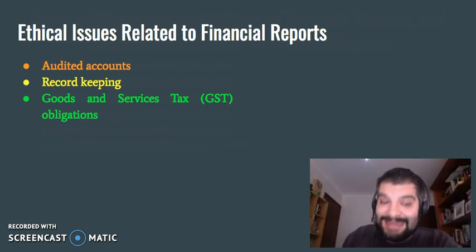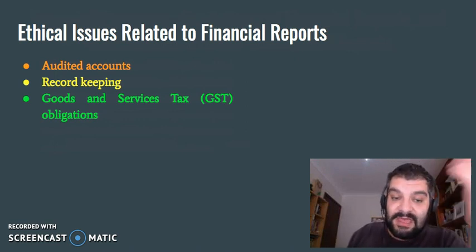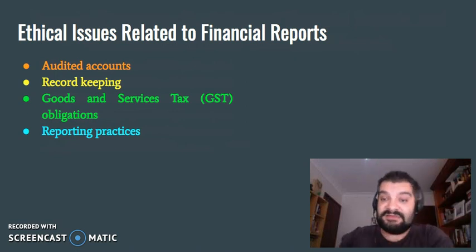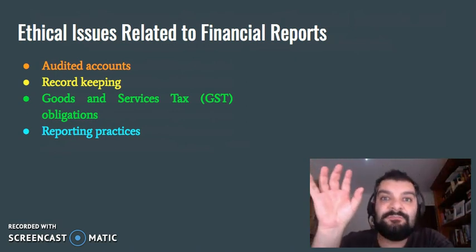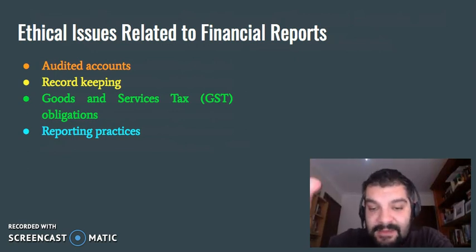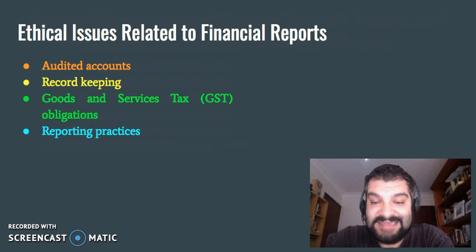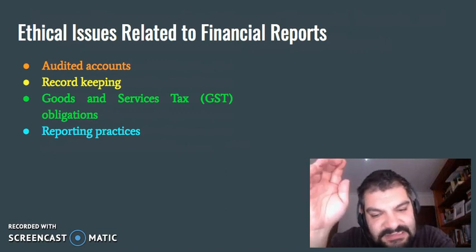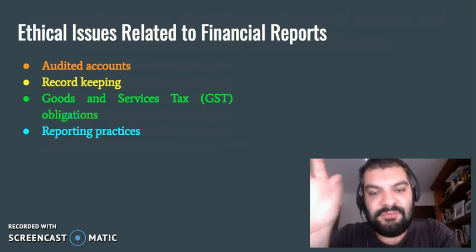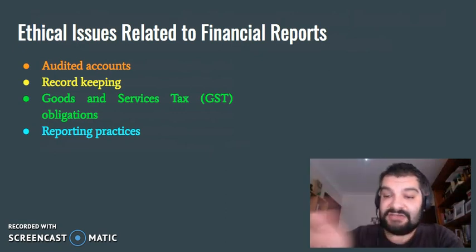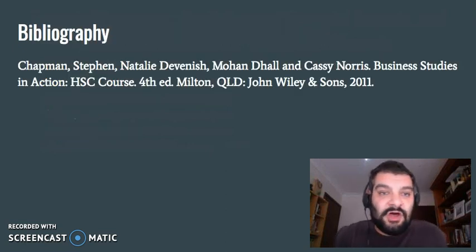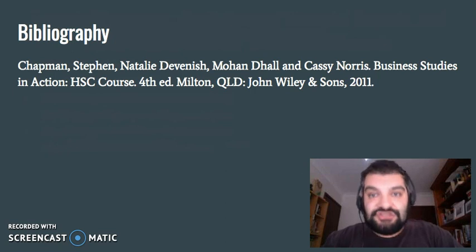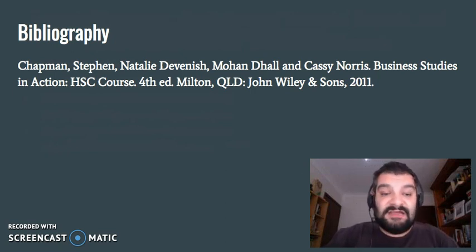Businesses have a legal and ethical obligation to make sure they're reporting and collecting the GST. And finally, reporting practices: not only are accurate financial reports necessary for taxes, but other stakeholders are entitled to access information about the business's current financial standing. Understating a profit or overstating the value of assets may actually be counterproductive, because when a potential buyer looks at the reports more closely, it might backfire for the business. I hope this video on the limitations and ethical issues related to financial reports has been useful. The next video will start looking at financial strategies, and the very first one will be cash flow management.